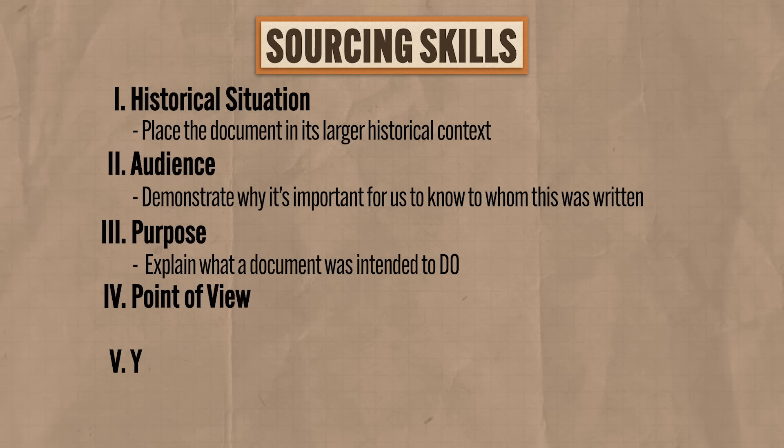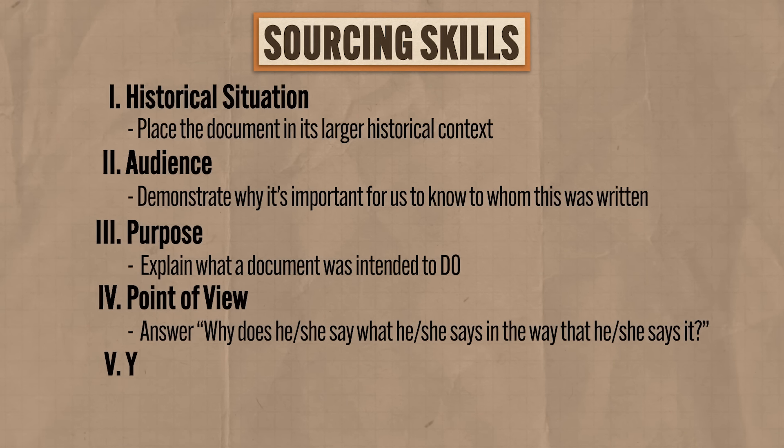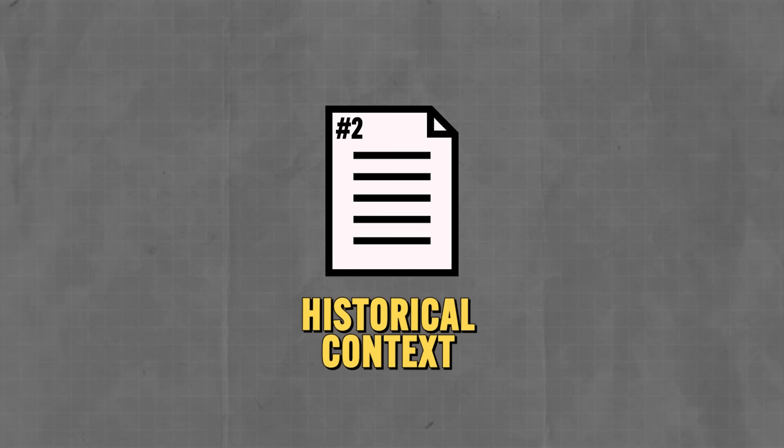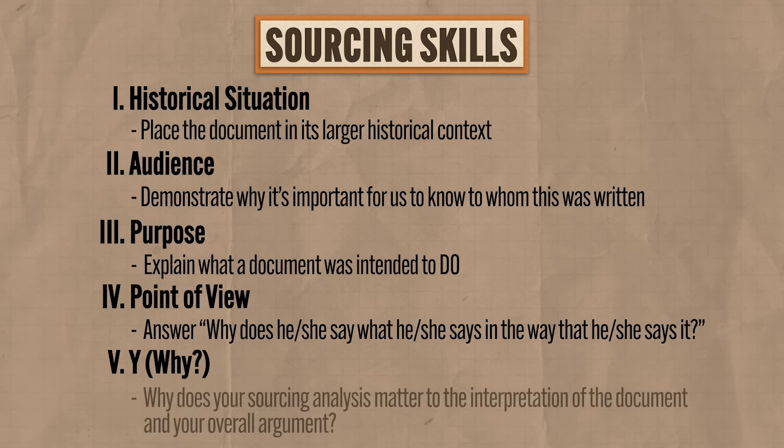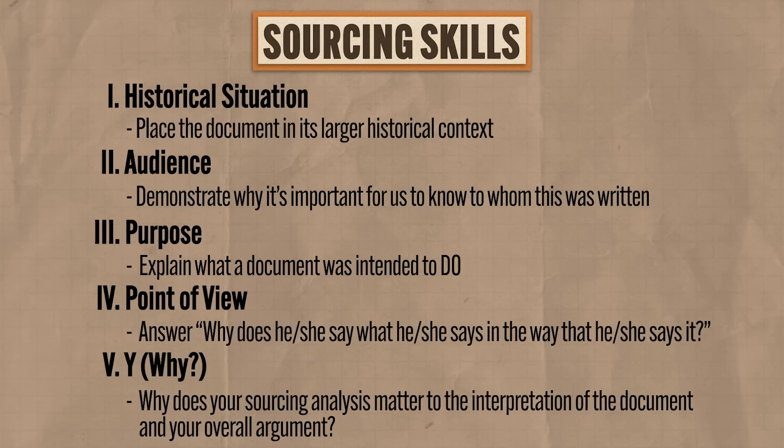To source for historical situation means to place the document in its larger historical context — if your document is Lincoln's second inaugural address, the historical situation is the American Civil War. To source for audience, demonstrate why it matters to know to whom the document was written. To source for purpose, explain what the document was intended to do. To source for point of view, answer why the author says what they say in the way that they say it — that last part is the special sauce. You only need to perform one of those sourcing skills per document. Your sourcing sentence should say 'The historical situation of this document is X, and that matters because...' — the 'why' is essential. Source three documents to be safe and you'll earn the point.